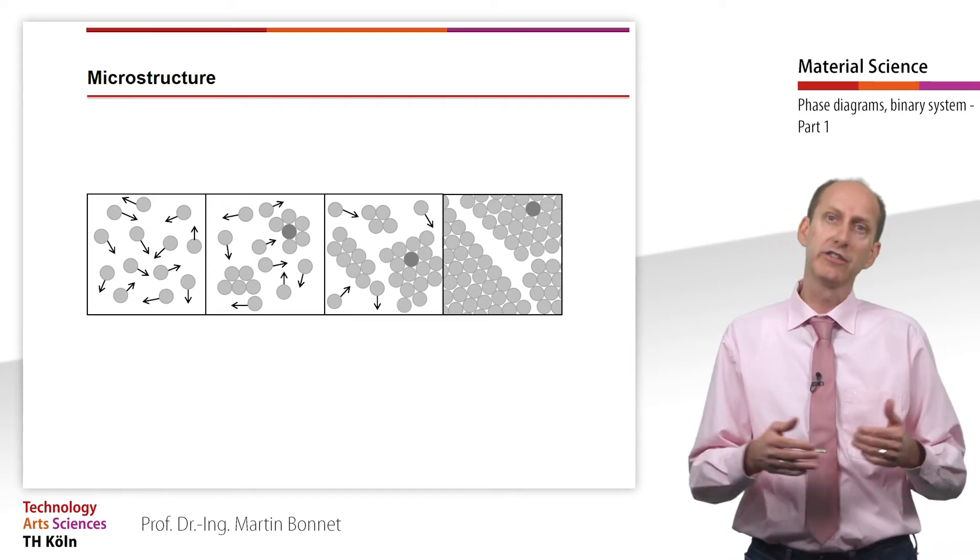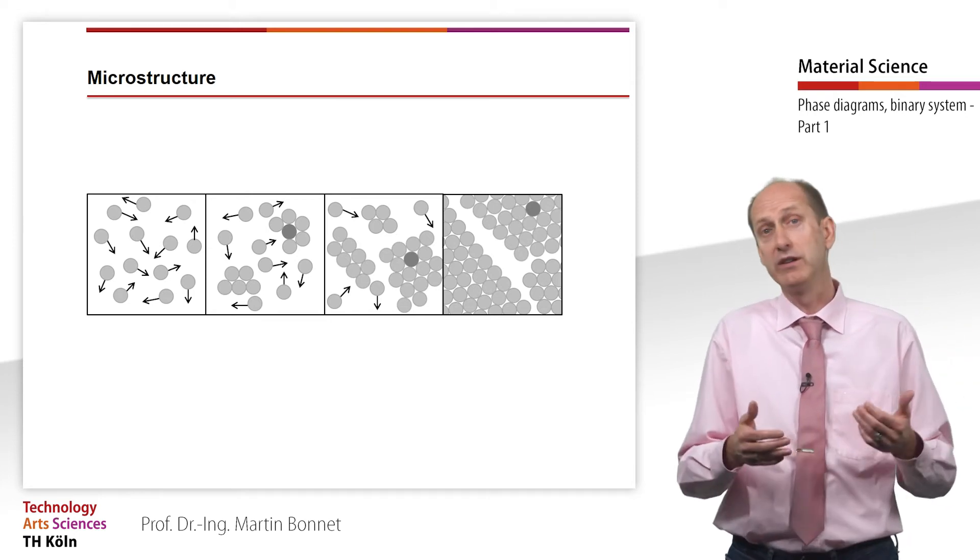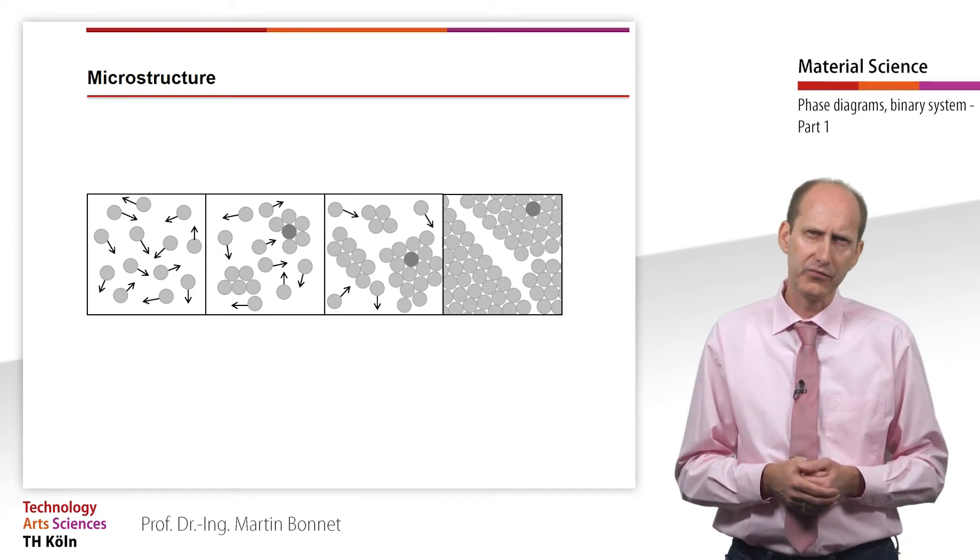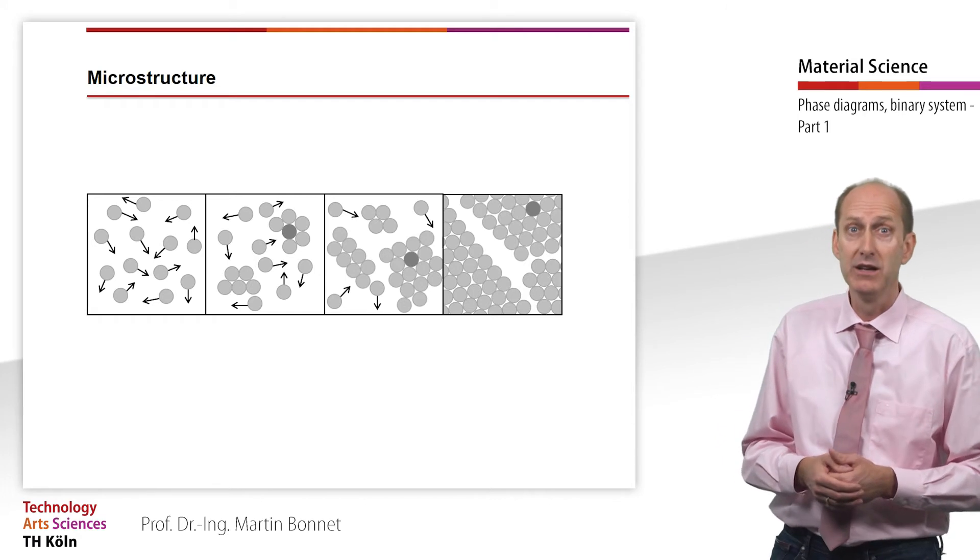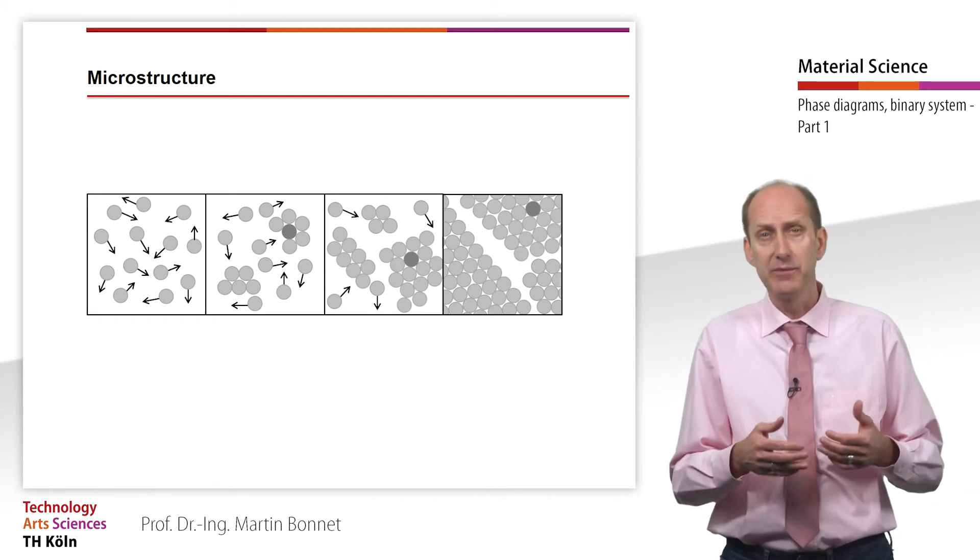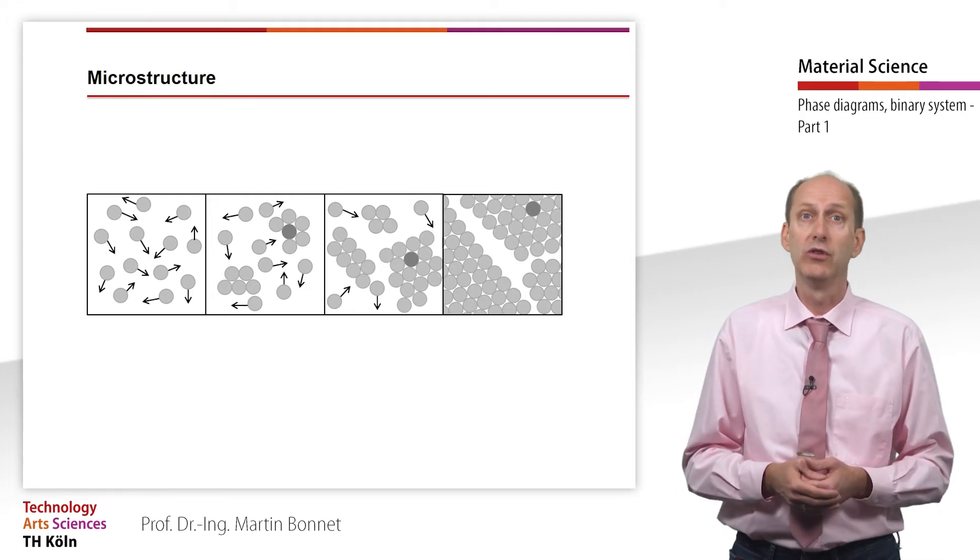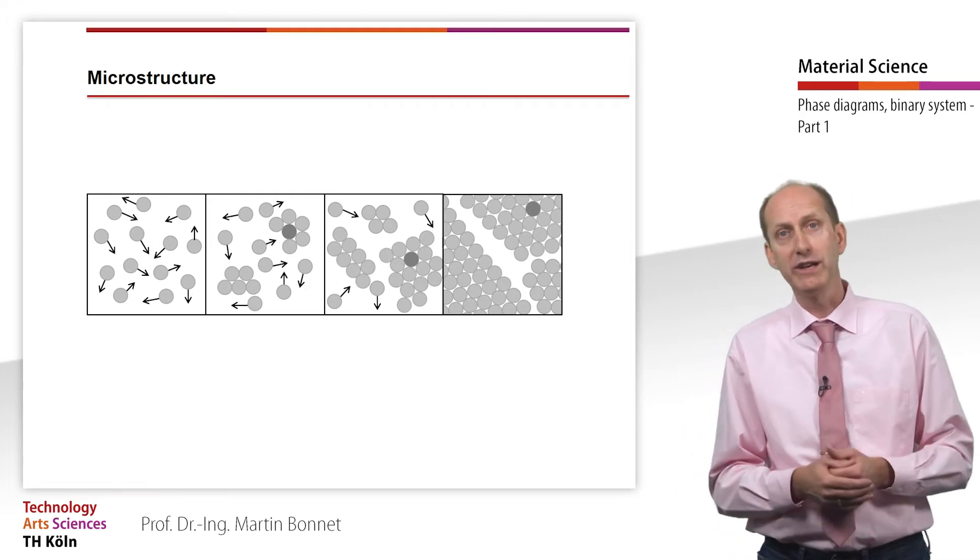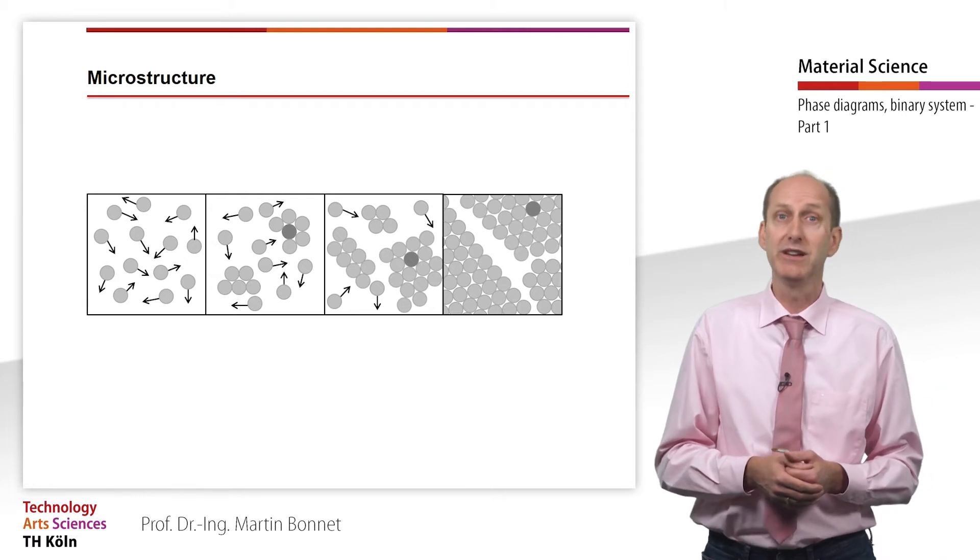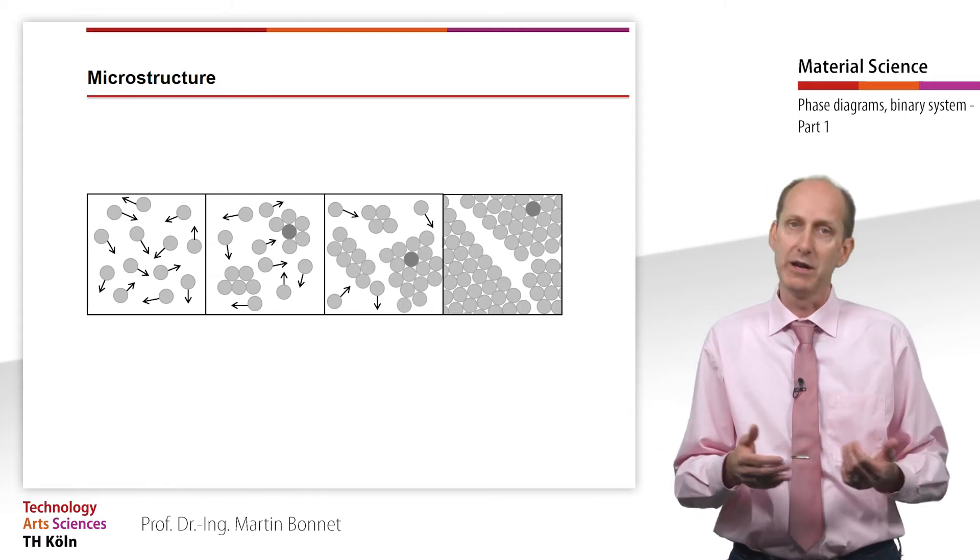The crystals continue to grow until they collide or until there is no melt left. The crystals that have been prevented from growing larger are called crystallites, or in metallurgy they are also referred to as grains. The boundaries between neighboring grains are called grain boundaries.